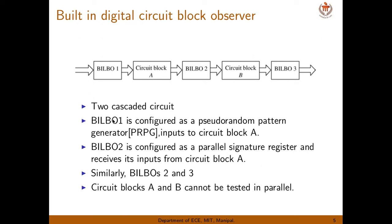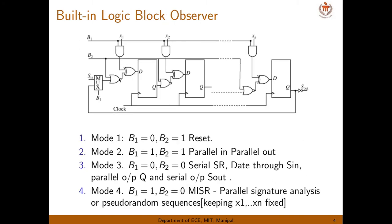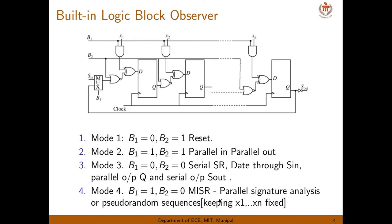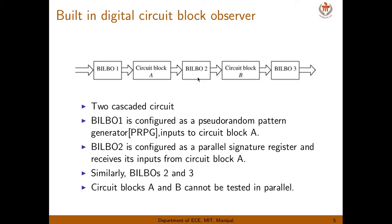To test circuit block A, BILBO 1 is configured as a pseudo-random sequence generator with B1 equal to 1 and B2 equal to 0, taking all outputs Q1 through Qn to generate the test vectors required for circuit block A. At the same time, BILBO 2 is configured as a parallel signature analyzer — the same mode but with weights kept constant. So BILBO 1 generates test vectors and BILBO 2 produces the parallel signature, allowing us to test circuit block A.